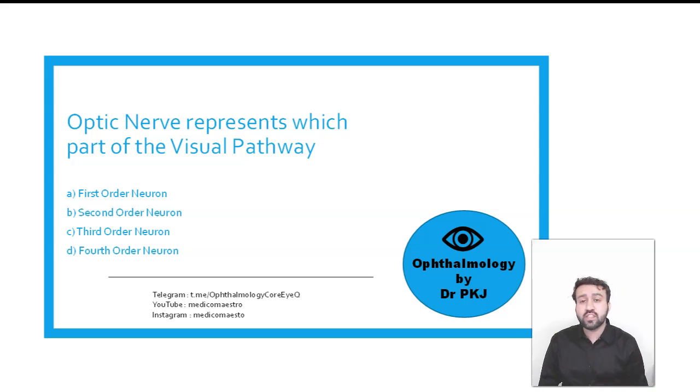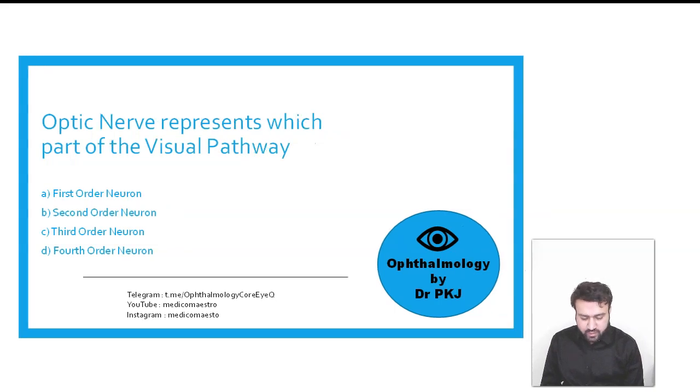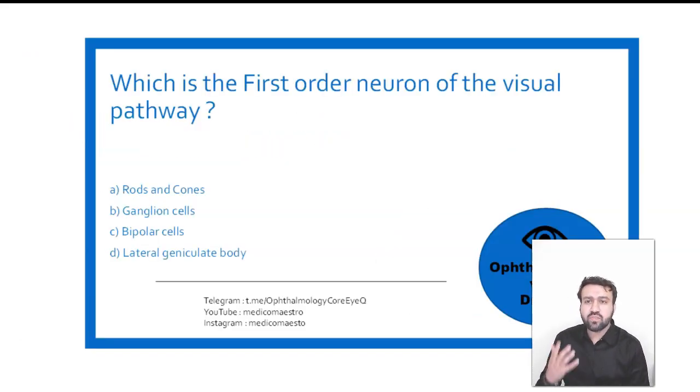So let's first see the two questions that I asked on the telegram channel. The first one is optic nerve represents which part of the visual pathway - the options are first order neuron, second order neuron, third order neuron. And then the second question was which is the first order neuron of the visual pathway - rods and cones, the photoreceptors, ganglion cells, bipolar cells or the lateral geniculate body.